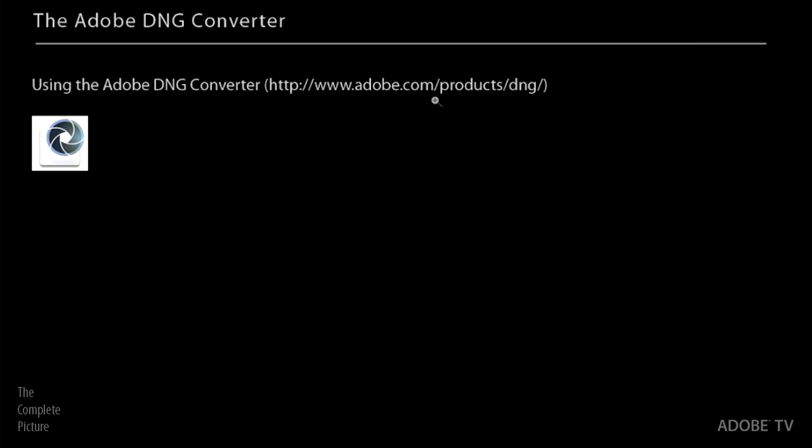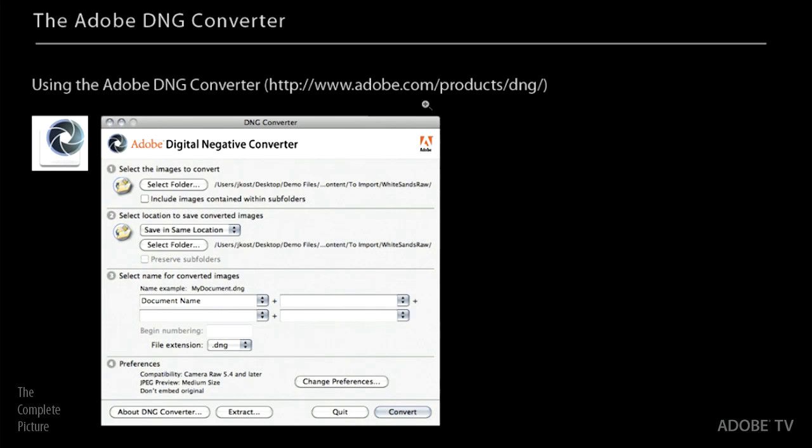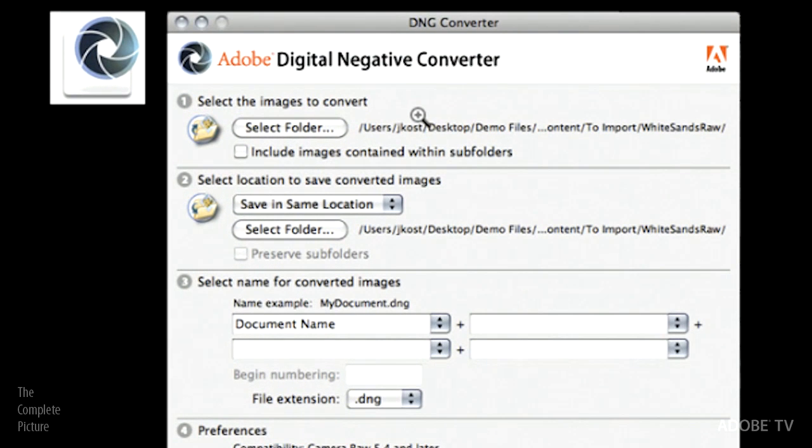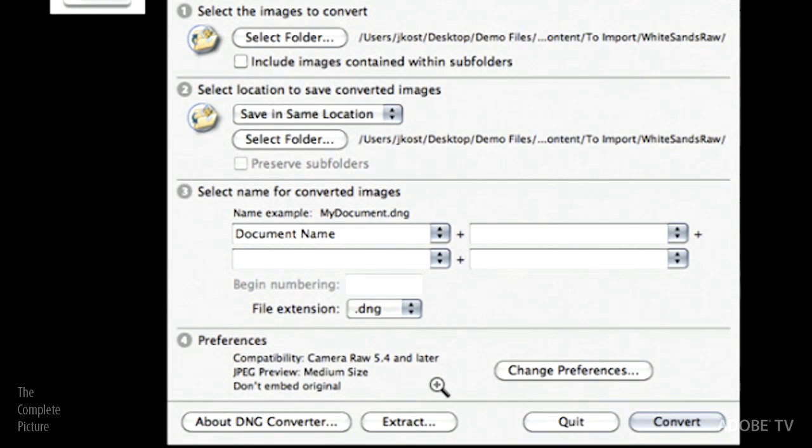So the DNG converter, this is a free converter. You can download it from adobe.com. You can either use this URL right here, or just Google like Adobe DNG converter, and you'll find it. There's a little icon for it, so it's an application. You double click on it, it will launch the DNG converter. It's very easy. You select the images that you want to convert. You tell it where you want to put the converted images. If you want to rename them, that's fine. And then there are a few preferences.